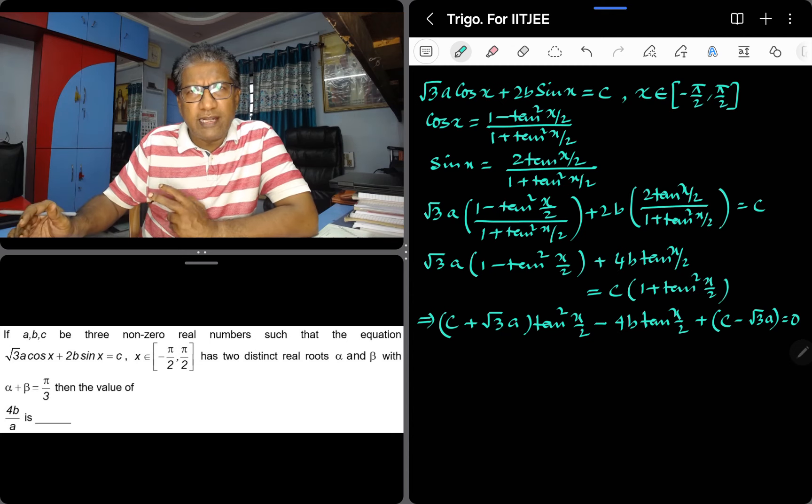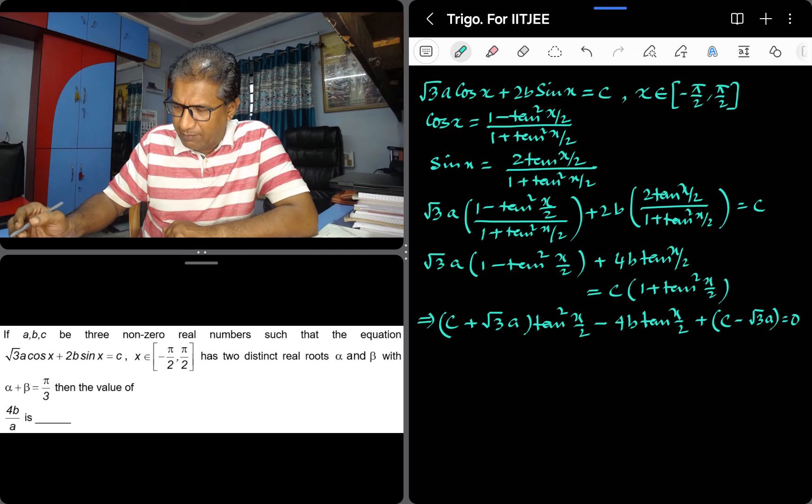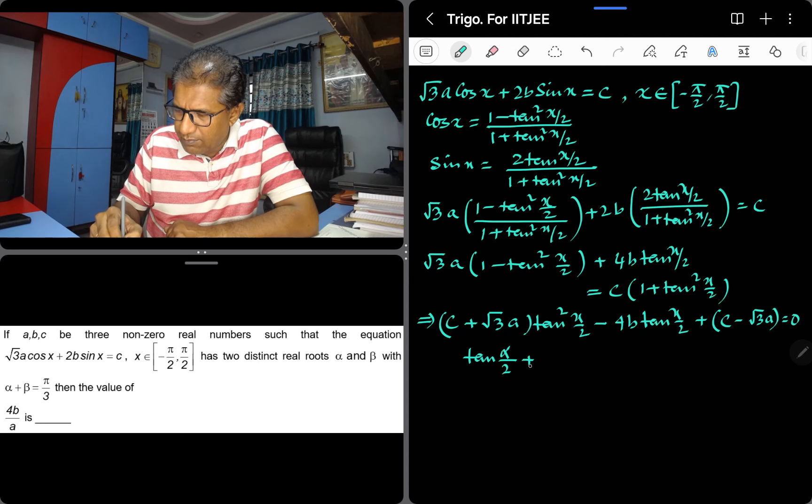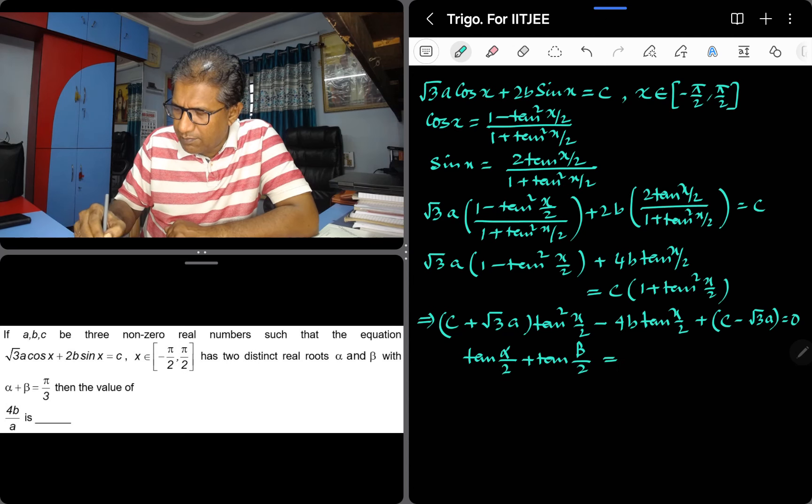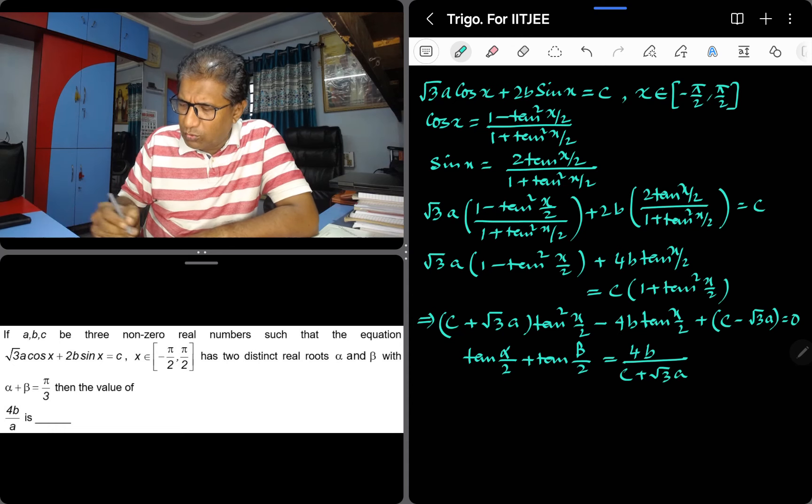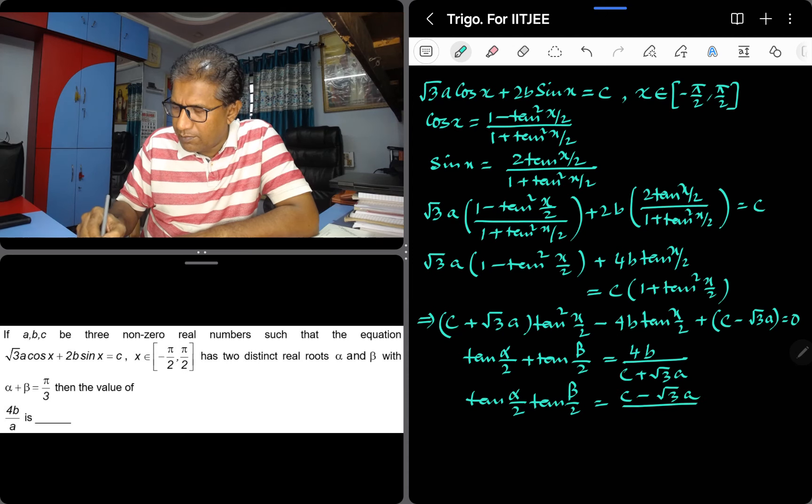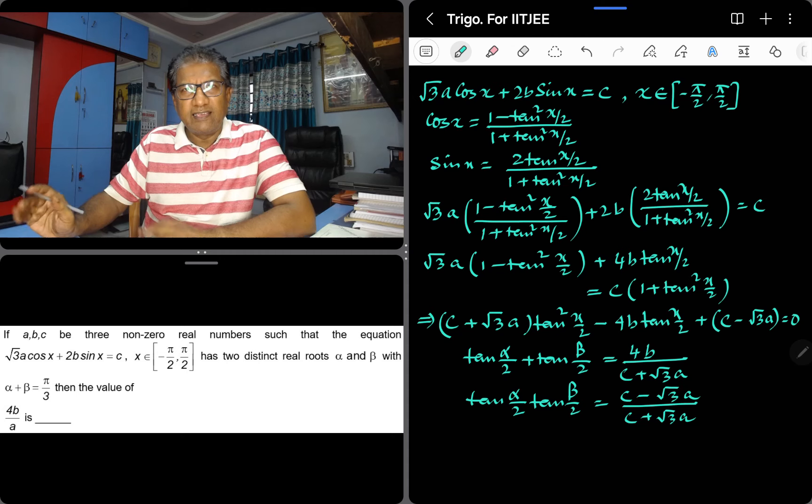This quadratic equation has two roots alpha and beta. Therefore the sum of the roots will be... And the product of the roots will be...